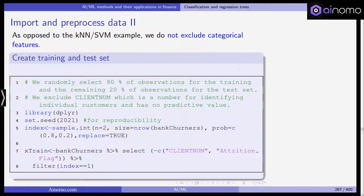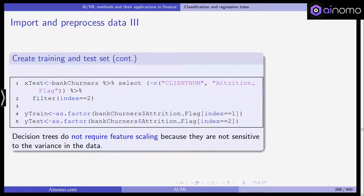We set the training set and the test set. We sample integers with 80%, 20% and then we select based on the client number. Same with the test set. And then of course we need the same for the response variable. Y-train and y-test are the response values in the training and test sample.